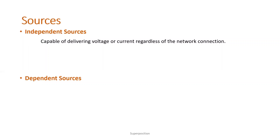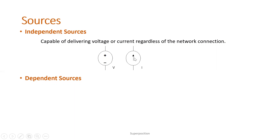The symbol for independent sources looks like this: you have a circle, then a plus and minus sign inside for voltage sources. For current sources, you have an arrow indicating the current flow of the current source.